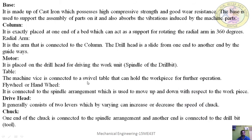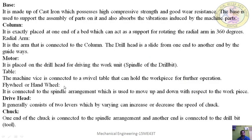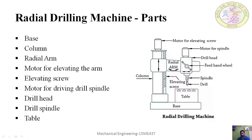The machine vise is connected to the drill table and can hold the workpiece for the operation. The handwheel or flywheel, connected to the spindle arrangement, is used to move the spindle up and down to give feed with respect to the workpiece. This wheel is used to give feed in the downward direction and to lift the spindle in the upward direction after the drilling operation is done.